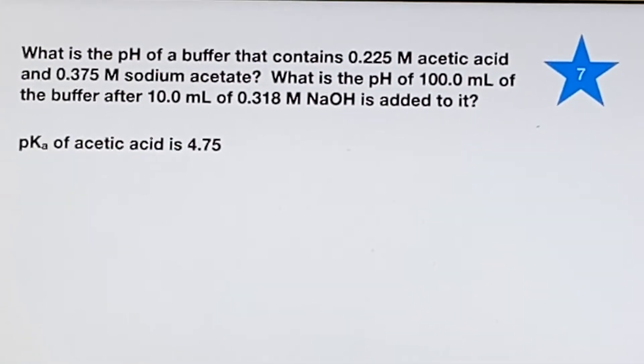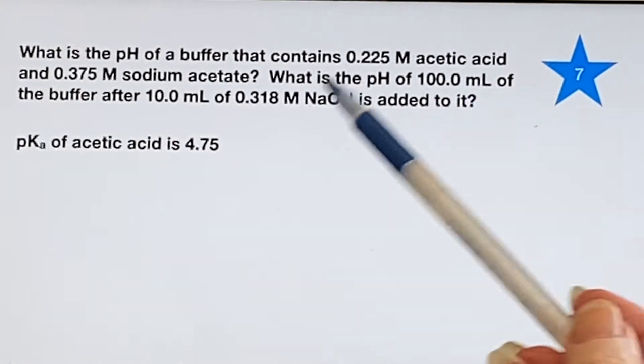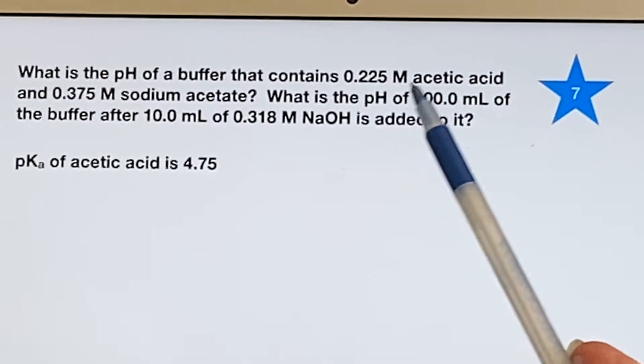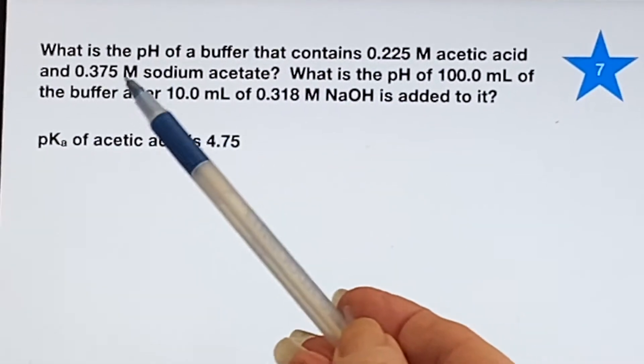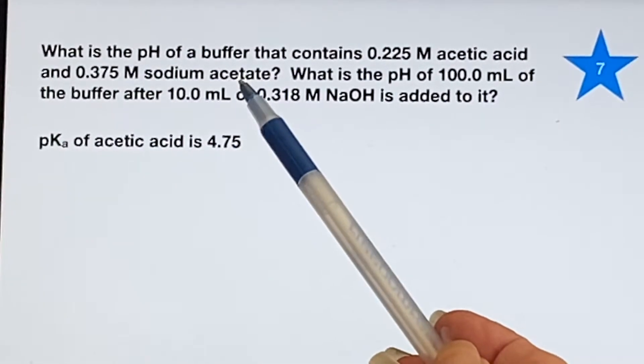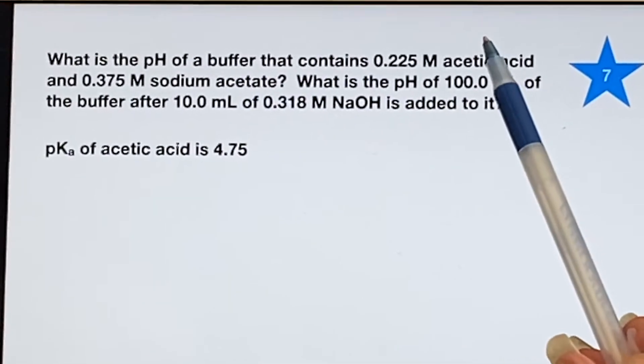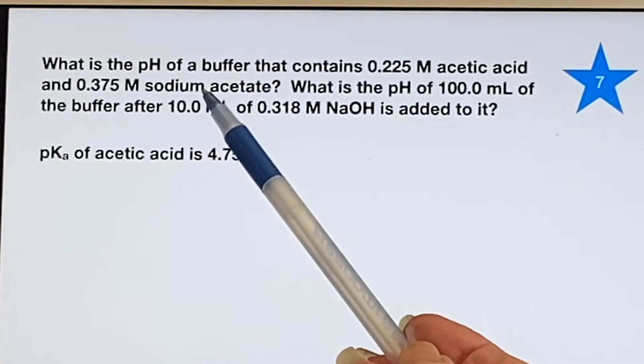What is the pH of a buffer? It's telling you the molarity of the acetic acid and the sodium acetate. So we have an acid and its conjugate base.